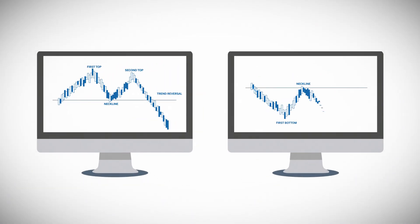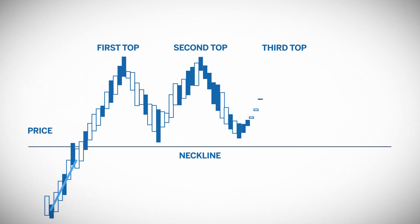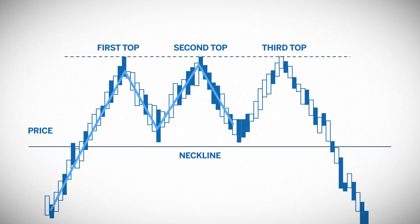Double bottoms form in much the same way. In this pattern, the market makes a low, retraces, and then tries to make another low. The market cannot push down below the original low and reverses its move back up. Triple tops and bottoms form the same way as double tops and bottoms. However, it takes one more attempt at making a high or low before their pattern is confirmed.